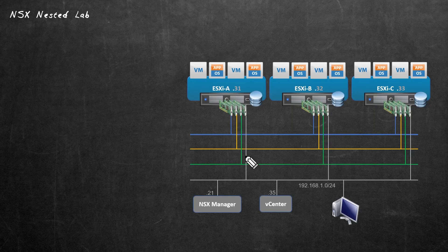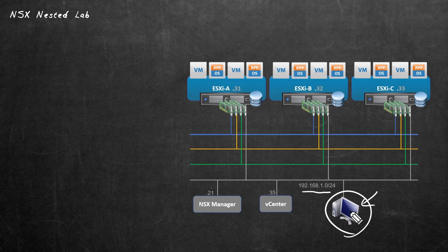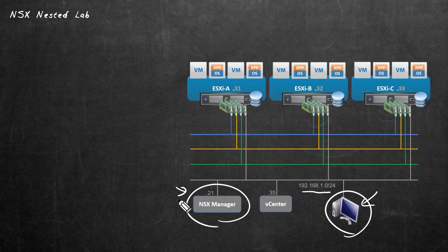To bring us up to speed and make sure we're all on the same sheet of music, here is our current nested lab environment. We have three ESXi hosts with VM kernel adapters on the management network of 192.168.1. Then we have the nested vCenter at .35. This can represent our management workstation, also on that management network. We just deployed in the previous video the NSX manager at .21, and at the moment the NSX manager is powered off.